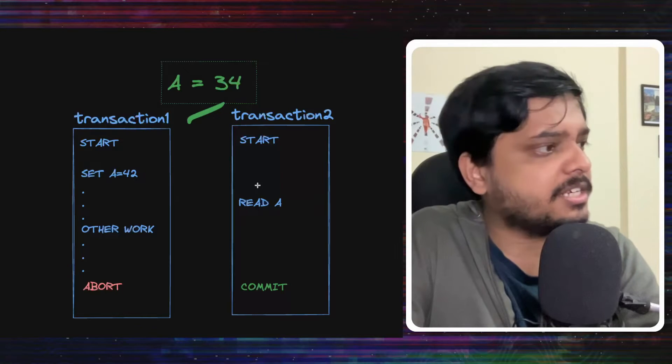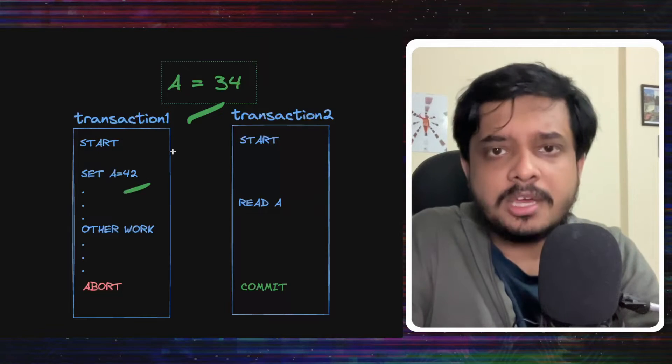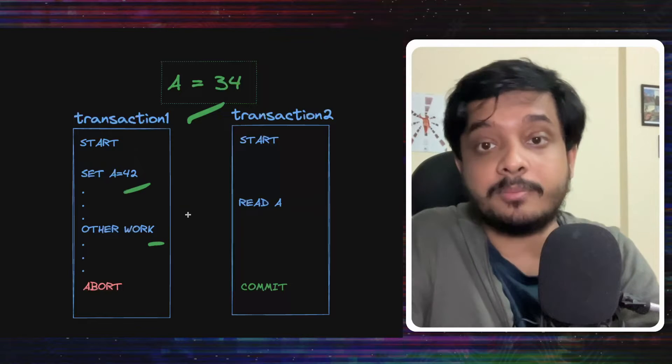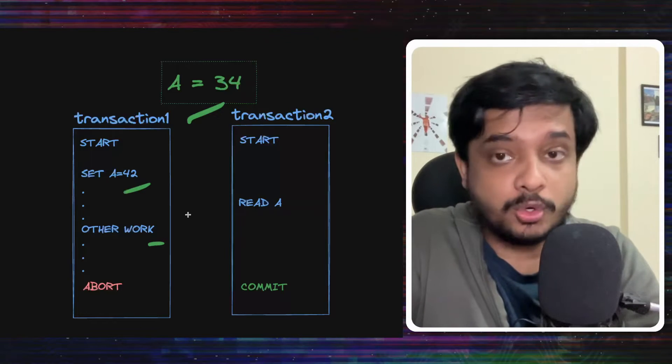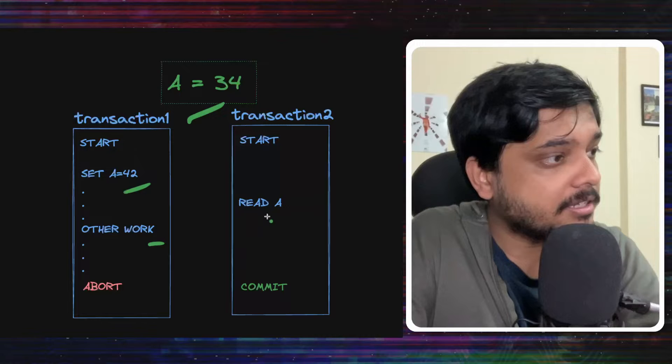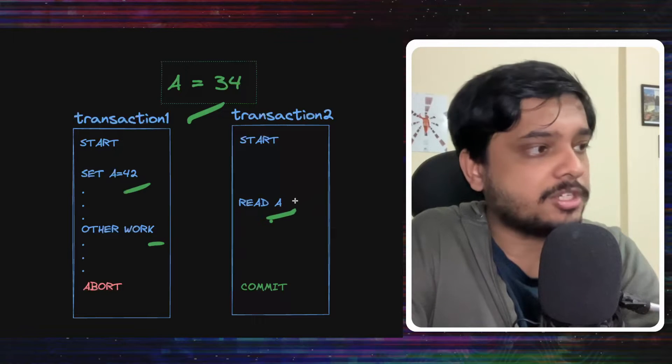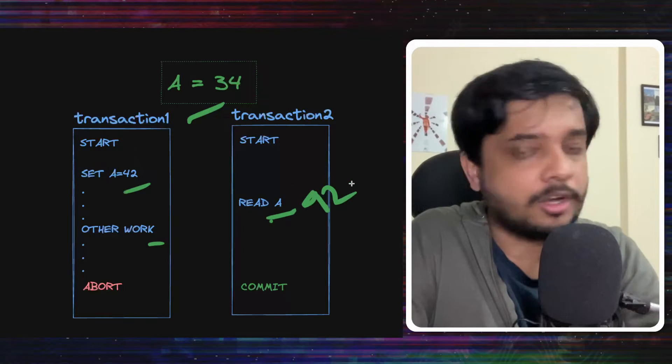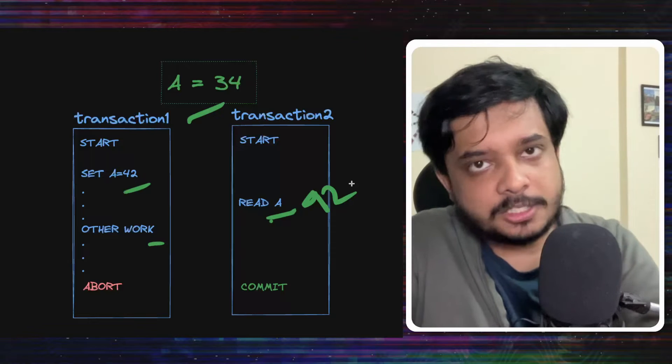Let's say there is some row in some table where the value of the attribute A is 34. Transaction 1 comes and changes the value of A to 42. Meanwhile, before it commits, transaction 2 comes along and reads the value of A, which currently will give you 42. Meanwhile, transaction 1 is busy doing other things.